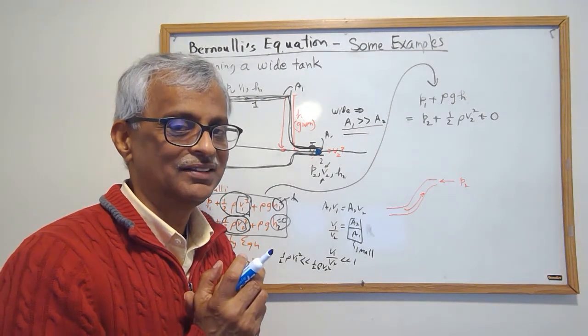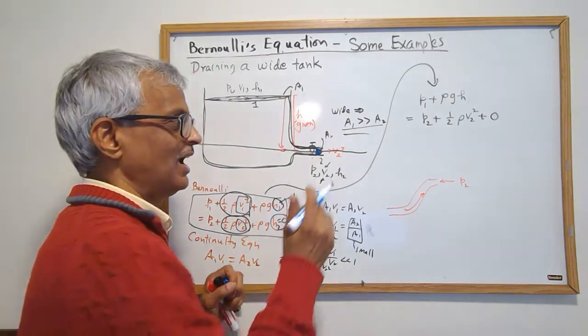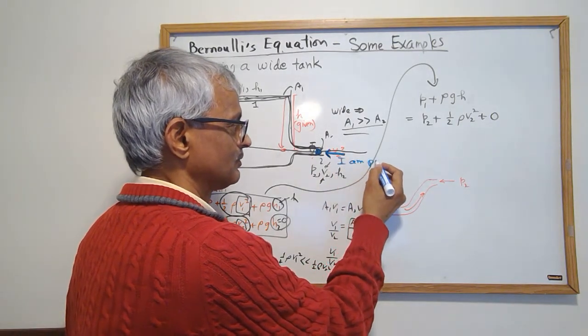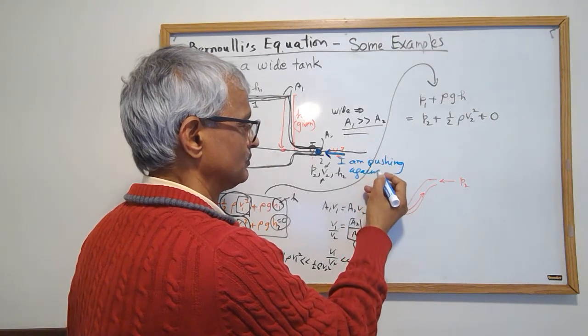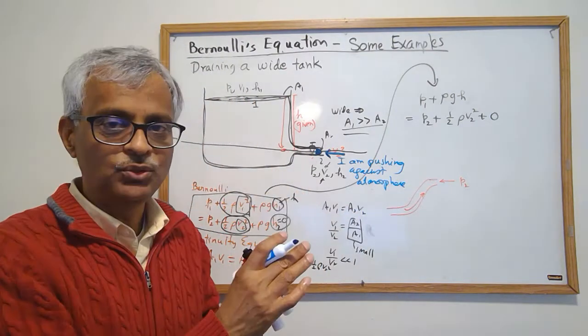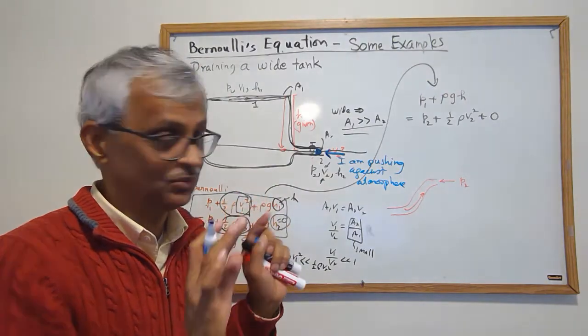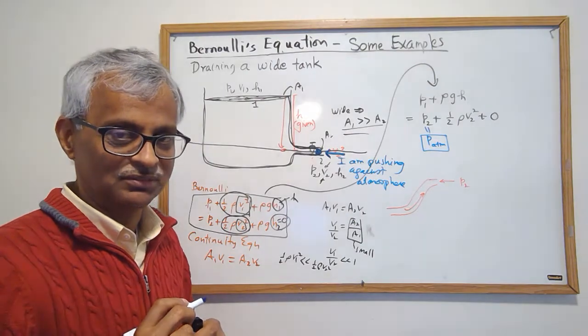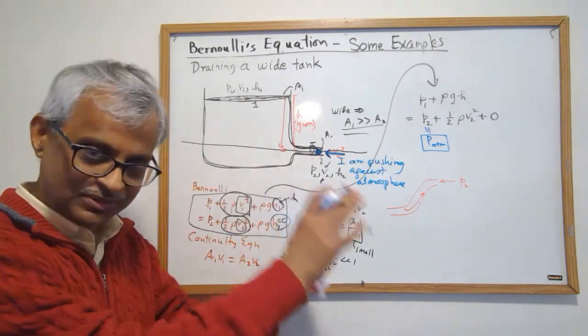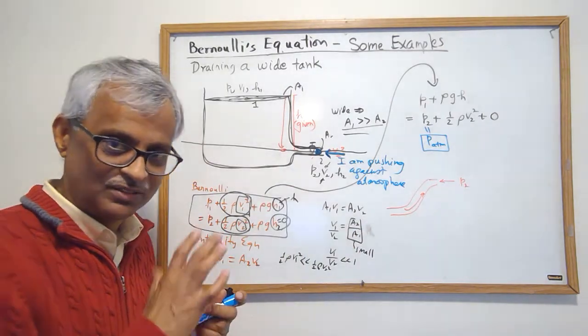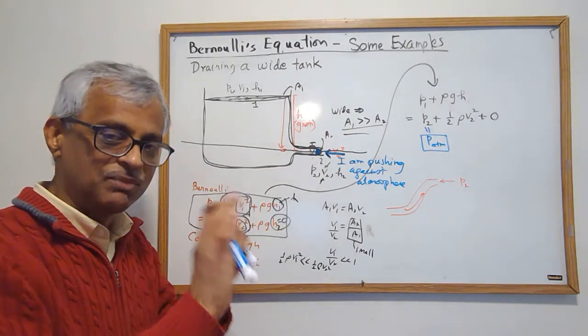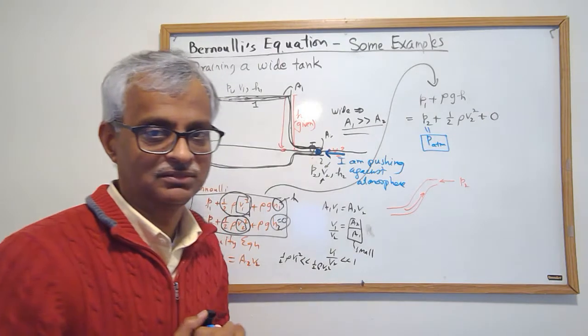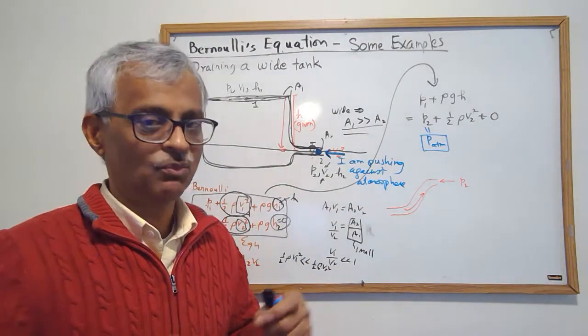You can pause and think about it a little bit. I'm pushing against atmosphere, therefore p2 is actually atmosphere only, not rho g h or anything. P2 is p atmosphere. Very very important observation. If you didn't get it, just rewind and watch it again. You have to ask what it is that I'm pushing against, not what's pushing me out.